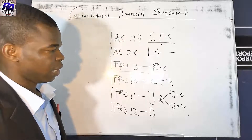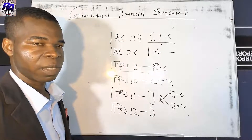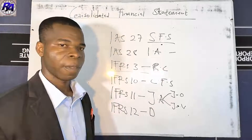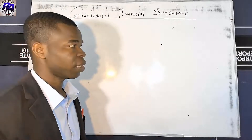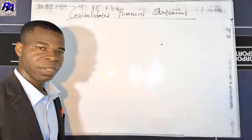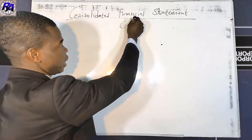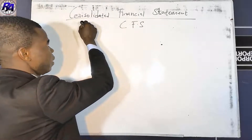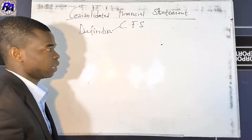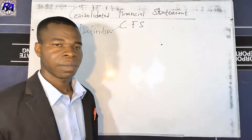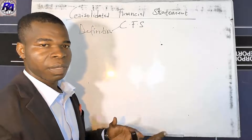We will go through all the standards and look at how to prepare consolidated financial statements after understanding the full international accounting standards. As an introduction, today we want to look at definitions of key terms. What is a consolidated financial statement? It is when an entity is required to prepare a statement of two or more entities as though they are a single economic unit.